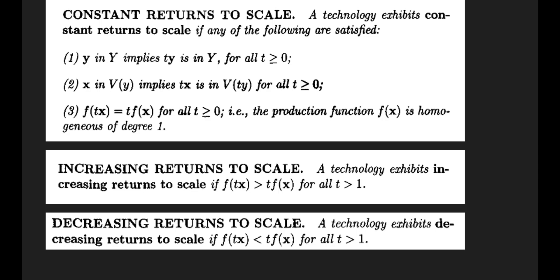Let us clarify certain things. The first condition: this is the production plan, and it belongs to the production possibility set. If this production plan belongs to the production possibility set, it means that we can scale up this production plan — we can increase the input bundle to increase the productivity level. If this production plan belongs to the production possibility set, then t times y must also belong to the production possibility set, ensuring we can scale up the production level.